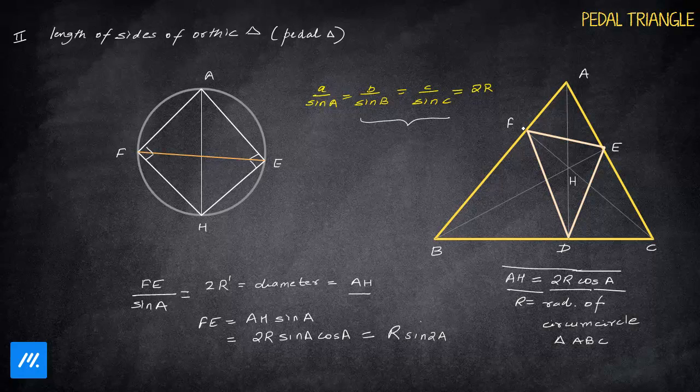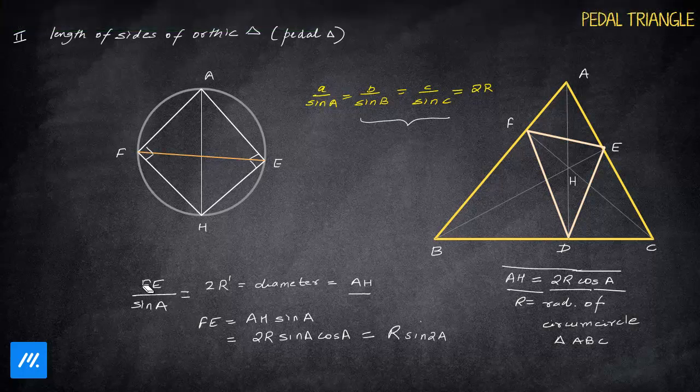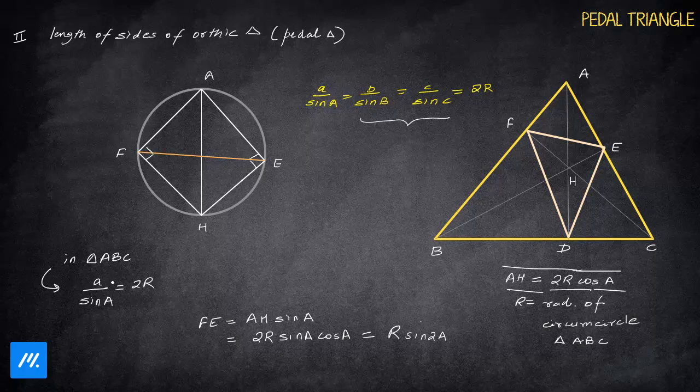So this is the length of side FE: R sin 2A. If this is the case, then FD will be R sin 2B and the other side will be R sin 2C. But there's a problem: we need to calculate R. Can we remove R completely? Yes, we can remove R also from the question. Using the sine rule in triangle ABC, a by sin A equals 2R, so a equals 2R sin A.